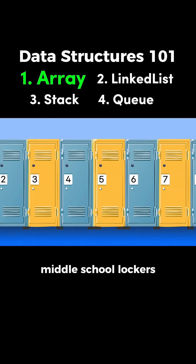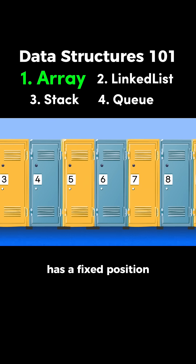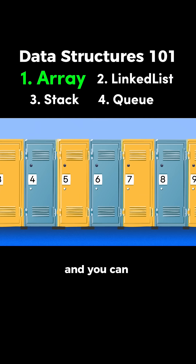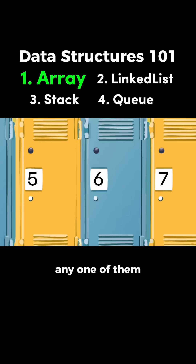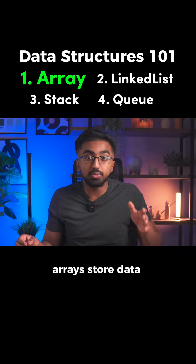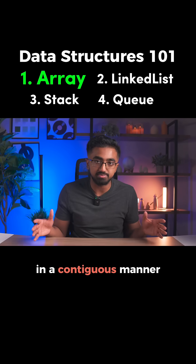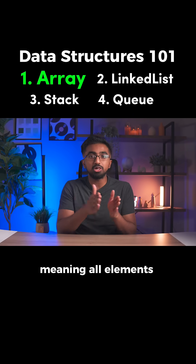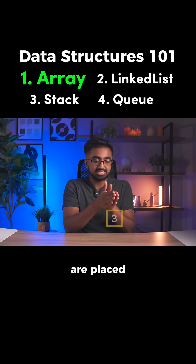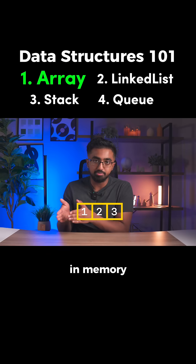Think of an array like a row of middle school lockers. Each locker has a fixed position and you can quickly go to any one of them just by knowing its number. Arrays store data in a contiguous manner, meaning all elements are placed side by side in memory.